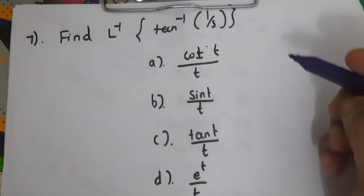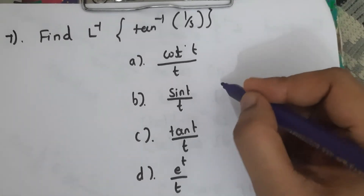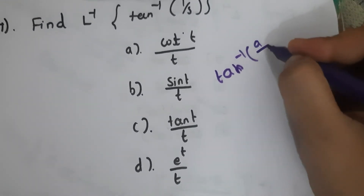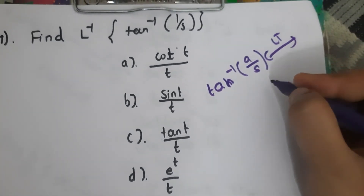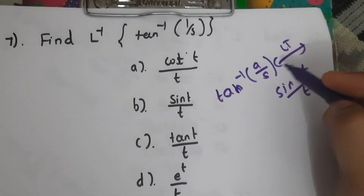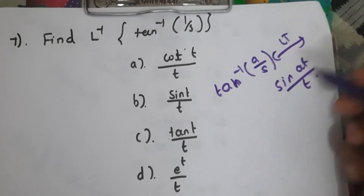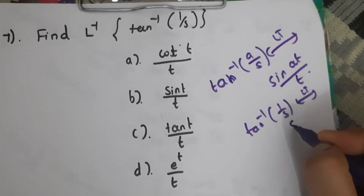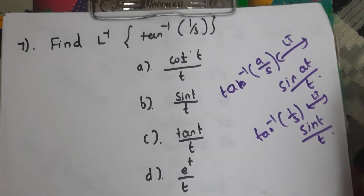Seventh question: find the inverse Laplace transform of tan⁻¹(1/s). The standard Laplace transform pair is: tan⁻¹(a/s) corresponds to sin(at)/t. Here a = 1, so tan⁻¹(1/s) corresponds to sin(t)/t. The answer is B.